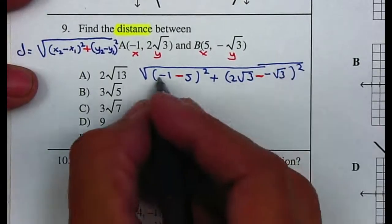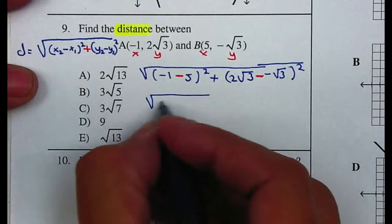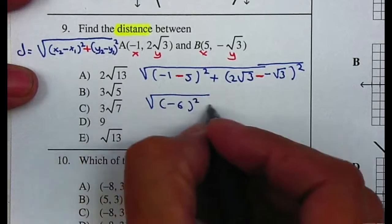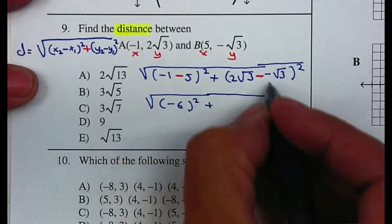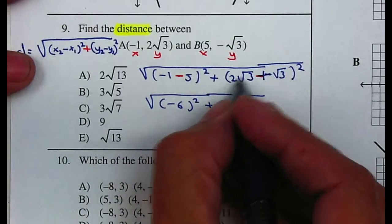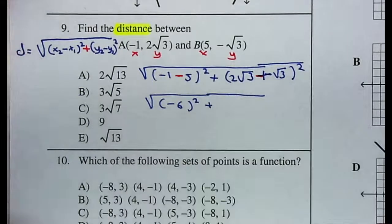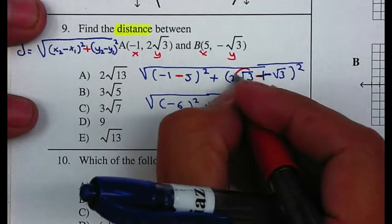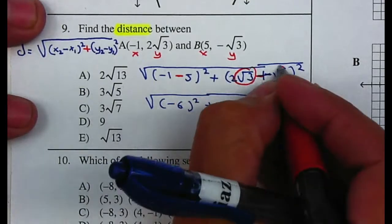In this case we have negative 6 squared plus the double negative is becoming positive. Now remember that whenever you are adding 2√3 plus √3, you need to think of this as a variable, as if it was just an x.